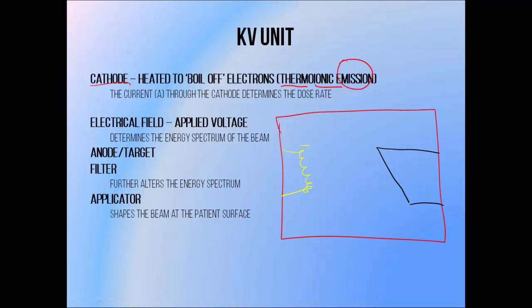On the other side of the tube we have the x-ray target, which we also call the anode, meaning something that electrons go to. In order to get the electrons from the cathode to the anode we apply a voltage, or electrical field. Basically we make the anode much more positive than the cathode in order to make electrons want to go there. The magnitude of the charge difference, or the voltage that we put between the two, determines how much energy the electrons get as they travel from the cathode to the target.